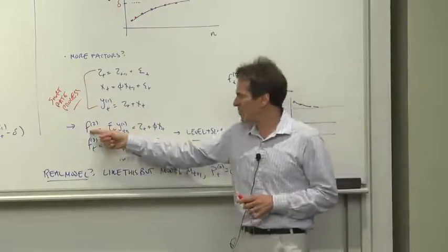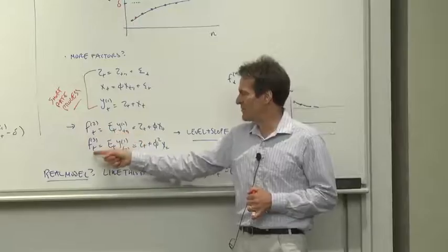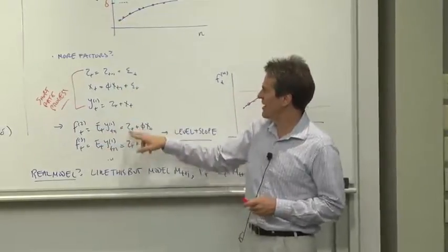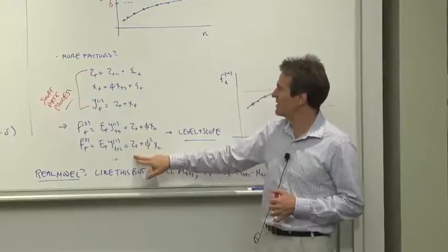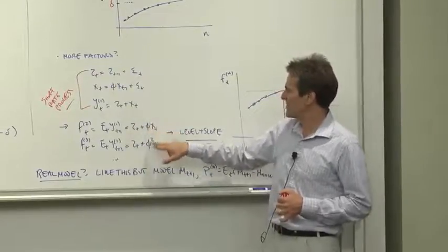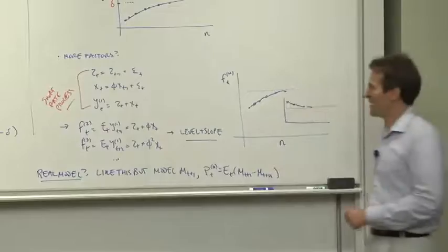Given that, how do we find the other ones? Forward rate is expected interest rate. The expected value of Z is always Z. The expected value of the X is phi, phi squared, and so on and so forth. And now look what you have.